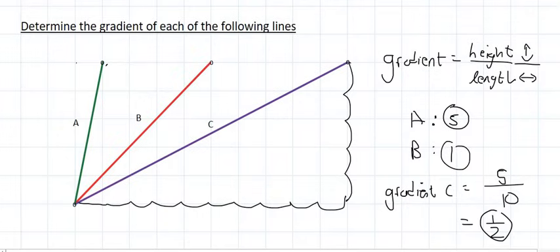If you were to look at those three lines, which one looks to be the steepest? Well A of course — look how steep it is, it's almost vertical, and that's why its gradient is 5. B is in between, so its gradient is 1. And C is the least steep, so its gradient is only a half.